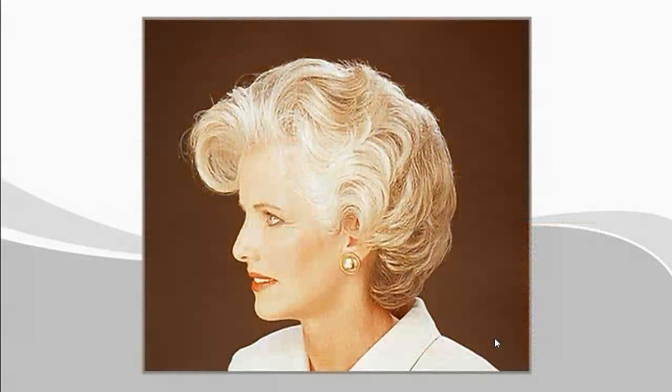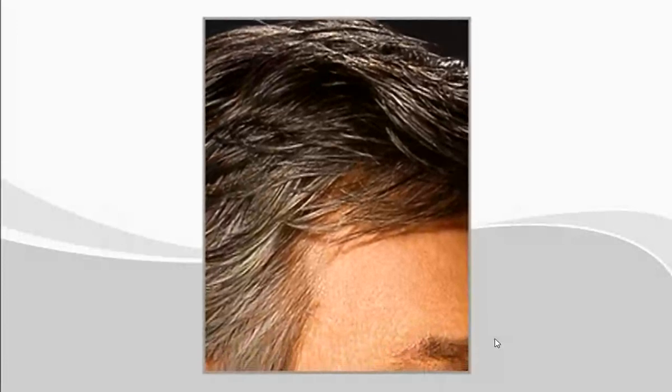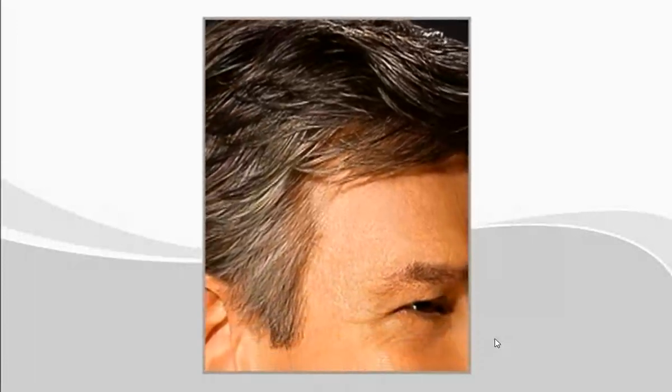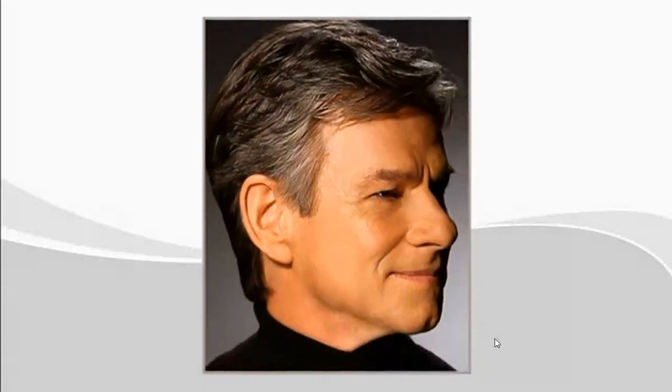Gray hair is the result of melanocyte cells that slow down in their production of melanin. Each hair strand gradually loses its color and the result is white hair. Since each hair is individual, it is not unusual to find a mixture of non-pigmented or white hair and pigmented hair on the same head, giving the hair the appearance of being gray.